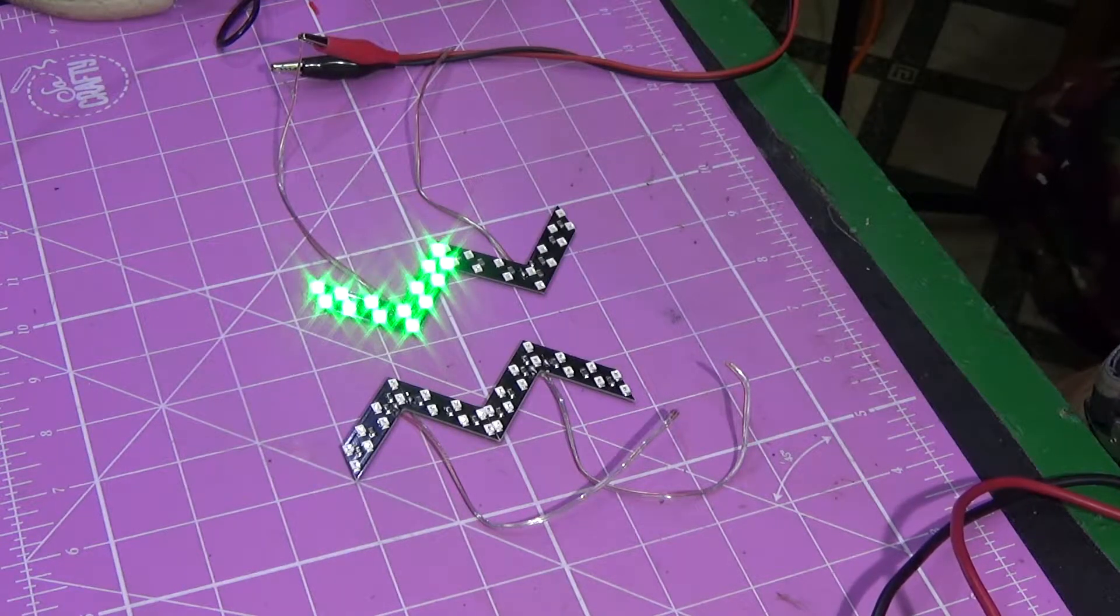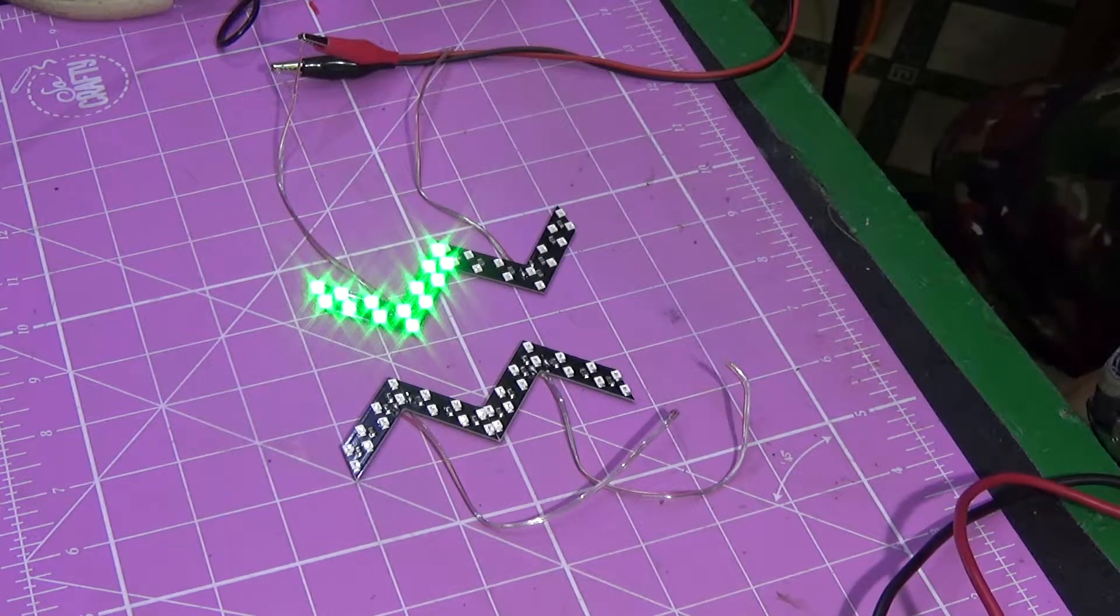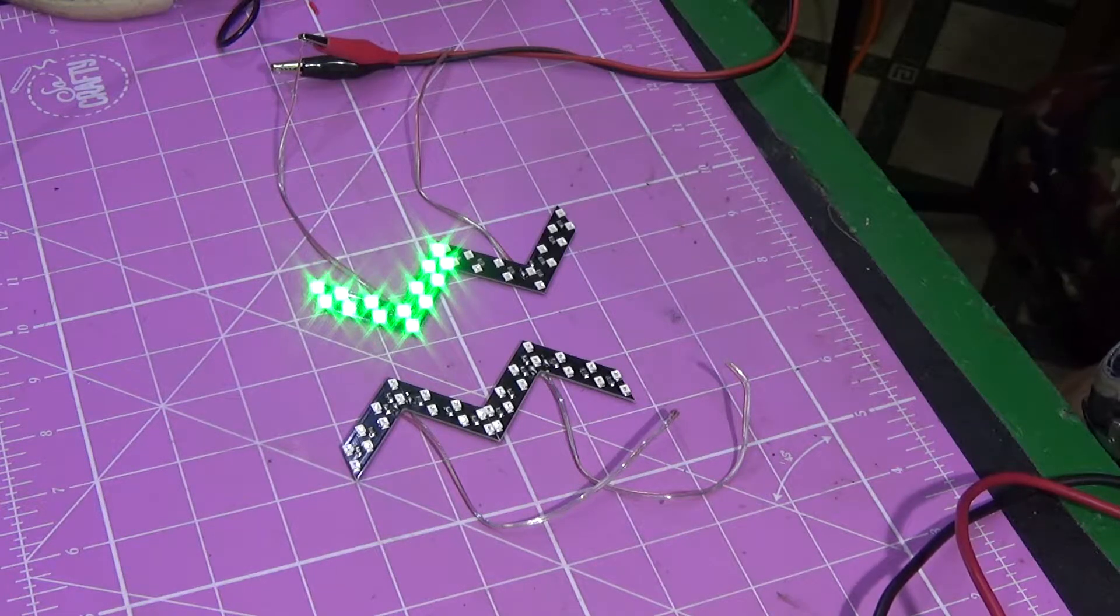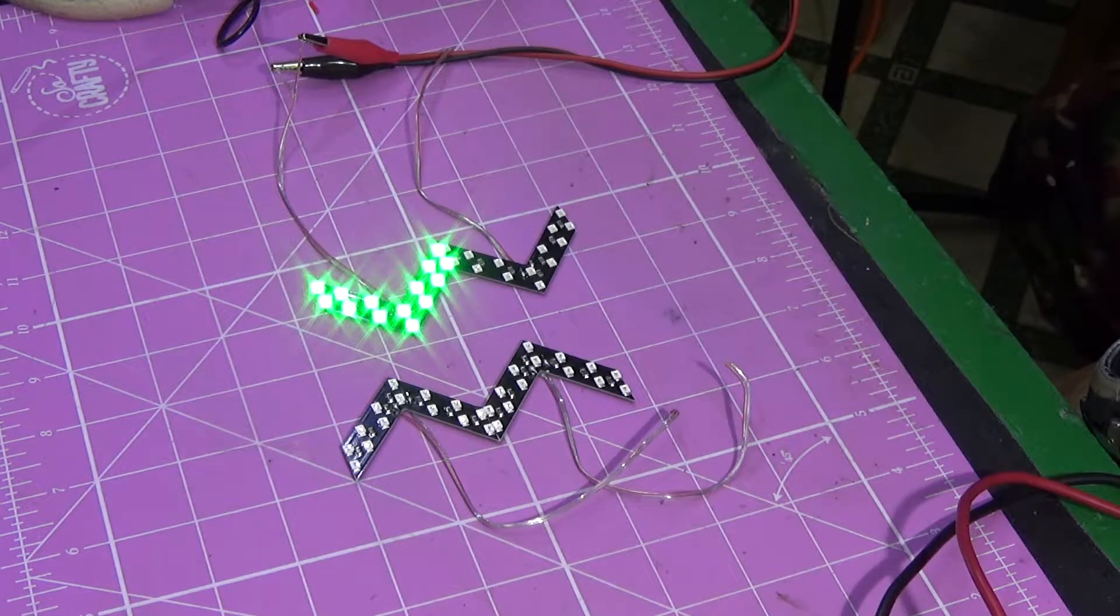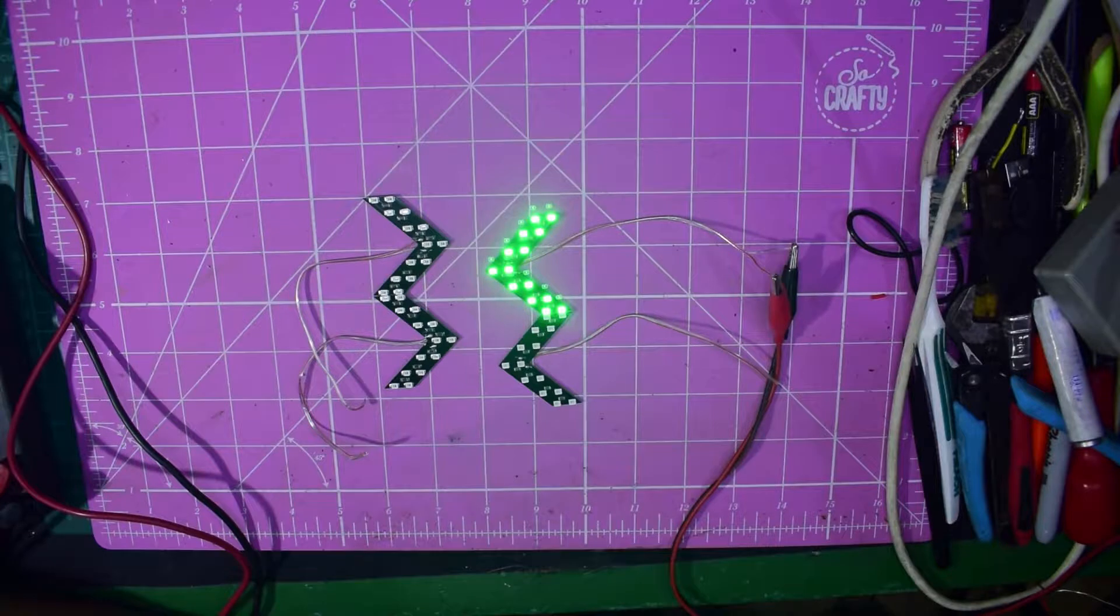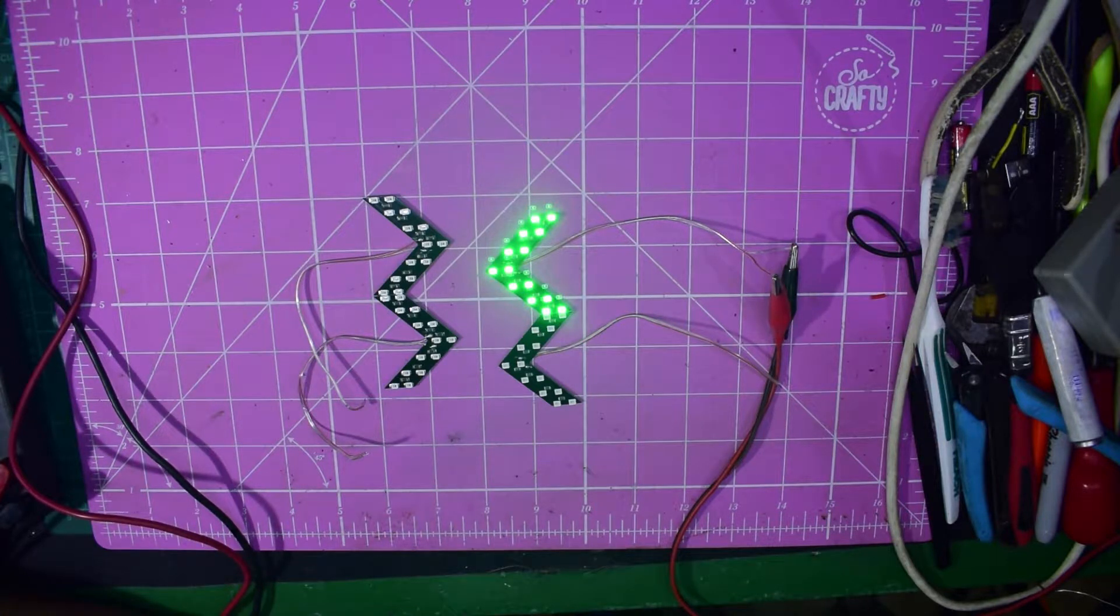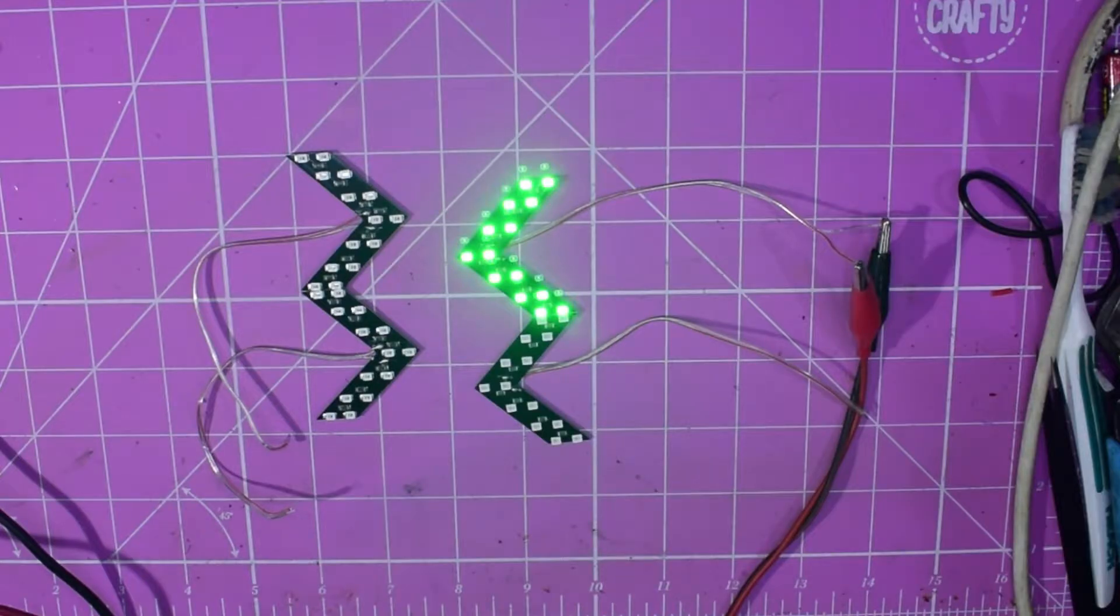What have we got on the bench at the moment, apart from some chevrons that have only one section lit up? Well, these were meant to be, and I say meant to be, things that you stick on the side of your mirror, and when you turn left or right, they flash. It's basically an extra wide-angle flashing LED for you.